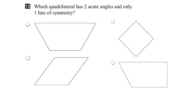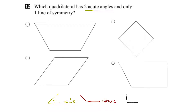So what do we know about angles? Acute angles are angles that are less than 90 degrees. Obtuse angles are greater than 90 but less than 180. And right angles are exactly 90 degrees.